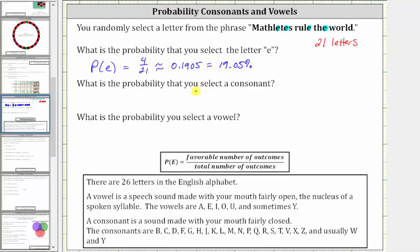Next, we're asked to determine the probability you select a consonant, and then the probability you select a vowel. Looking at our notes below, the vowels are A, E, I, O, and U, and sometimes Y, but we'll assume they're just A, E, I, O, and U, and the consonants are the letters that are not vowels. Actually, it might be easier to count the vowels first, which will also help us with number three.